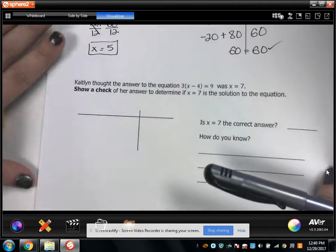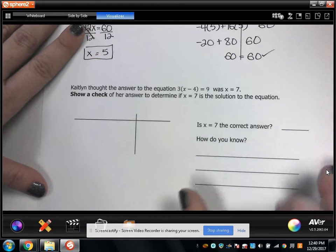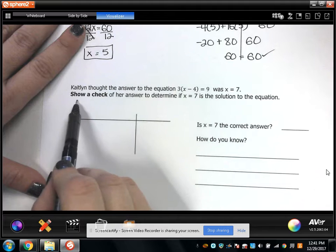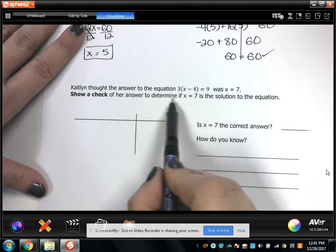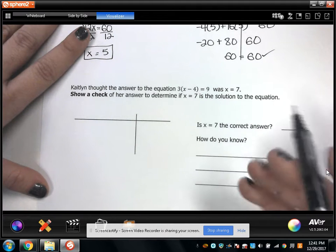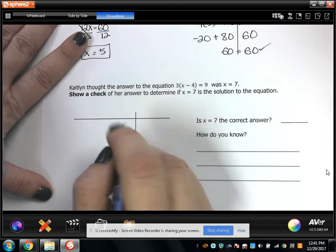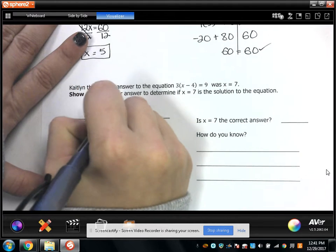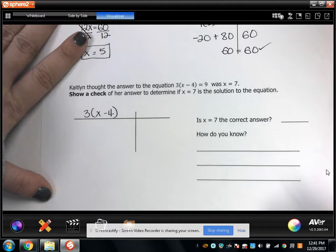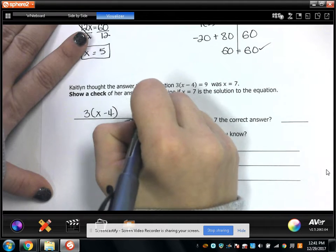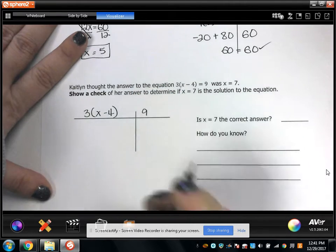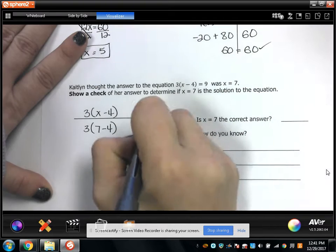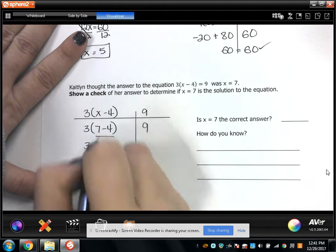And lastly, Caitlin thought the answer to her equation 3x minus 4 equals 9 was x equals 7. Show a check of her answer to determine if x equals 7 is the solution to this equation. So let's see. It doesn't want me to solve, it wants me to show a check. So I know how to do that. This side of the equation is 3 times x minus 4, and this side is 9. And I'm going to plug in 7. 3 times 7 minus 4. 9. 3 times 7 minus 4 is 3.